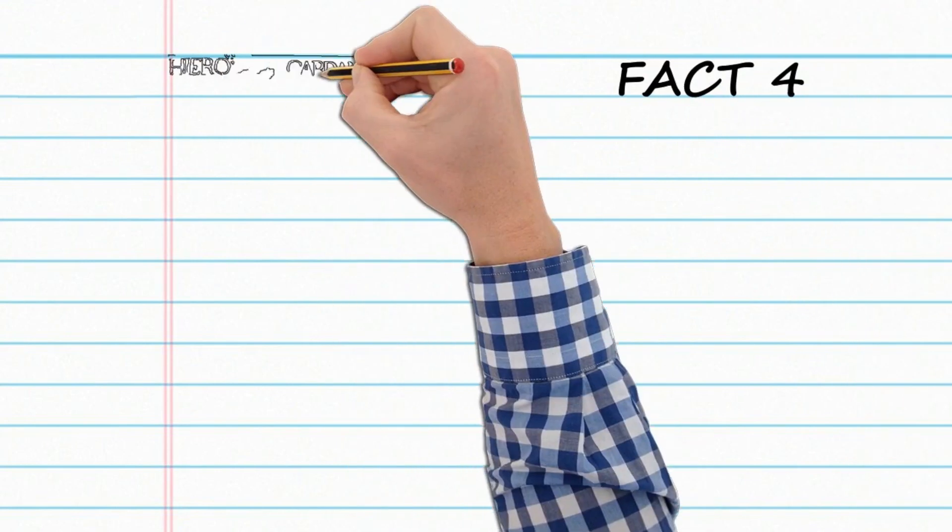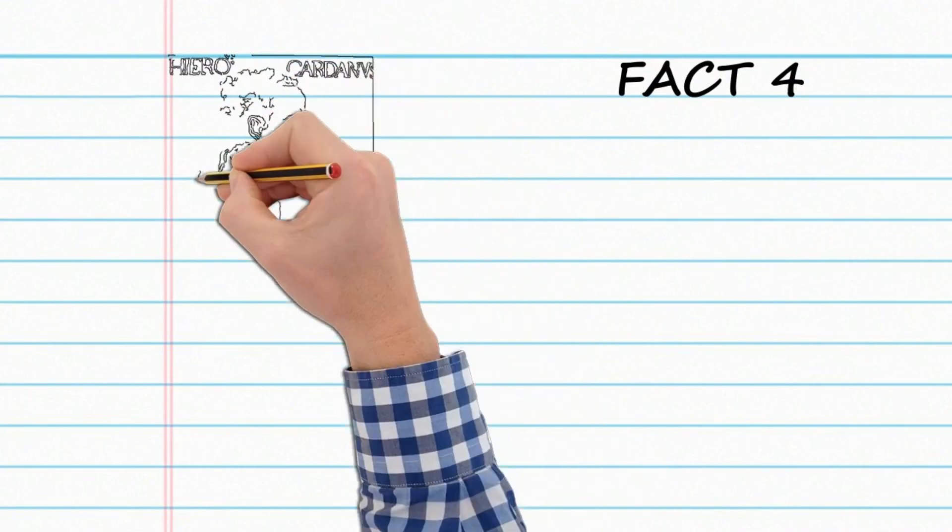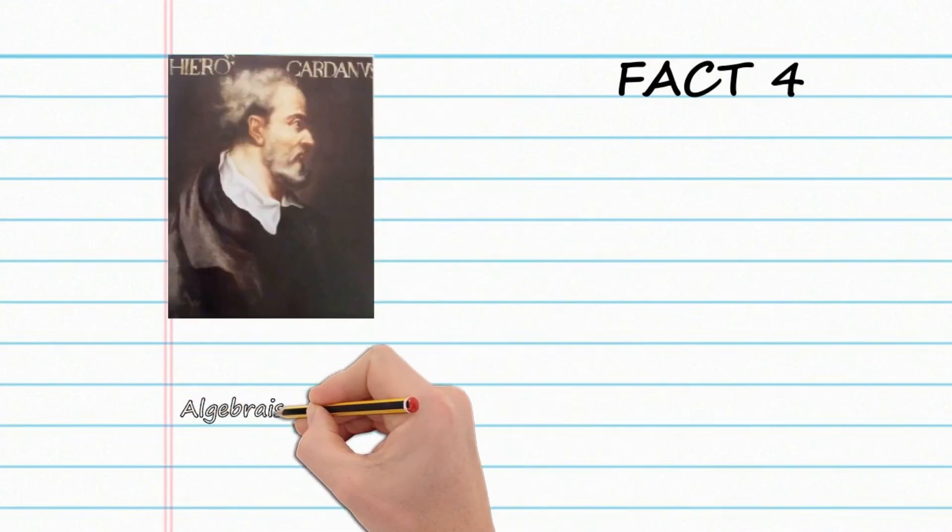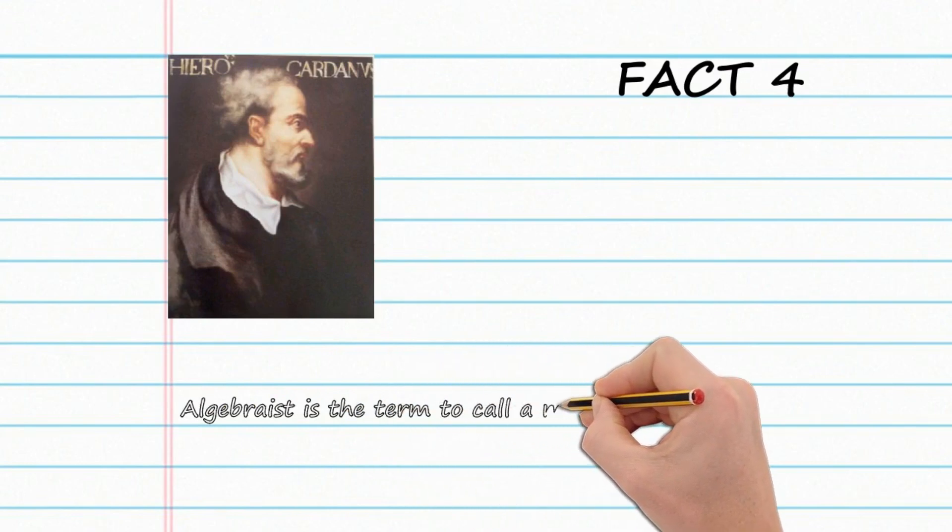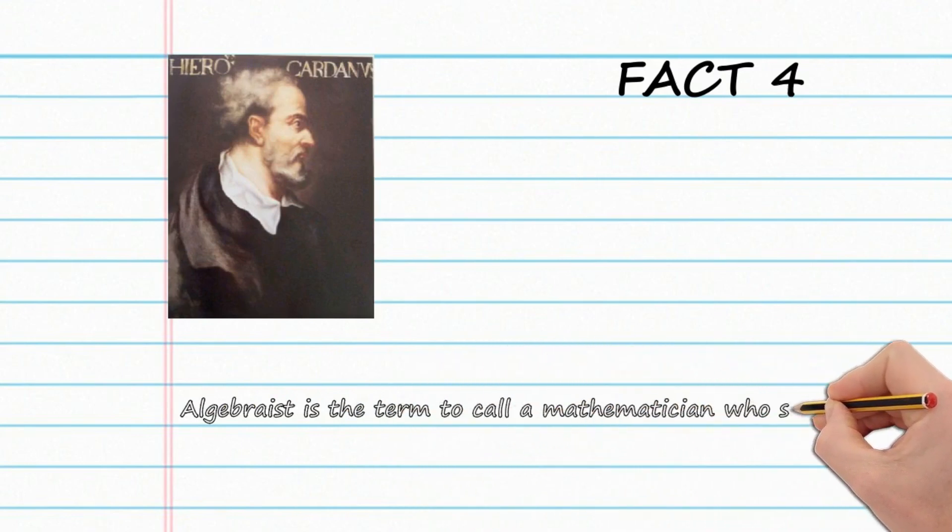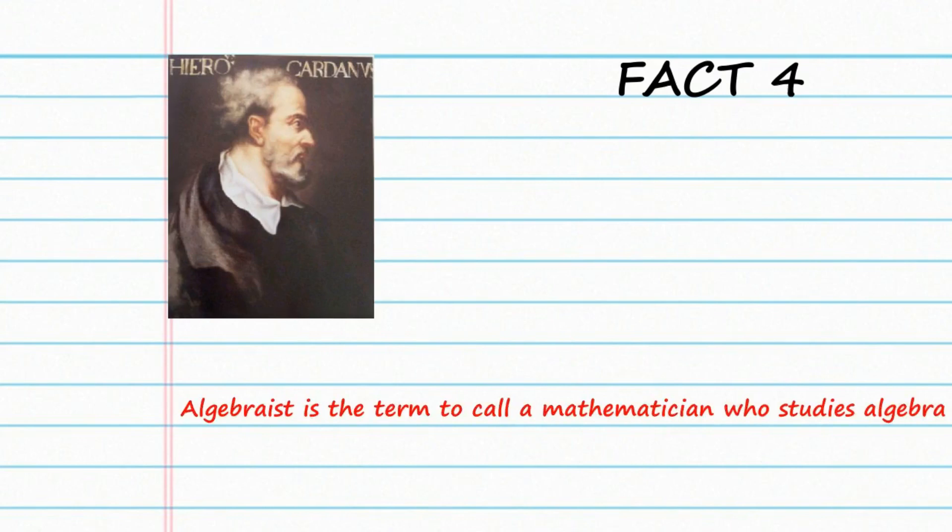Fact number 4 tells us that algebraist is the term to call a mathematician who studies algebra. I have provided a list of notable algebraists for our enthusiastic learners. Some of the famous algebraists are Abu Kamil, Alexander Anderson, Emile Artin, Rosemary Bailey, Ibn al-Banna al-Marrakushi, Victor Wagner, and many more.